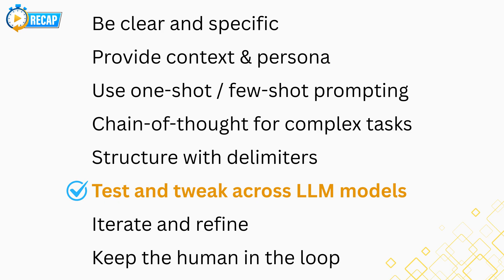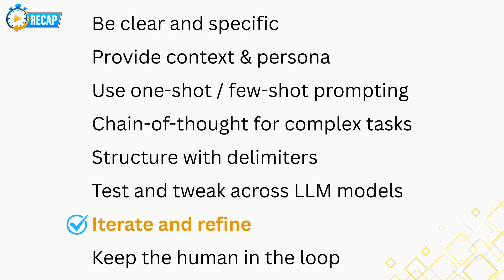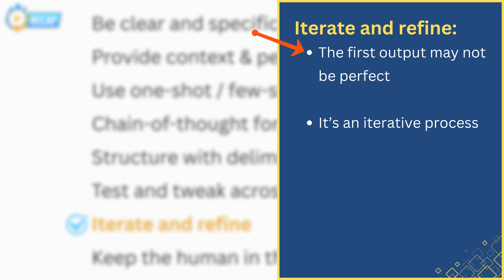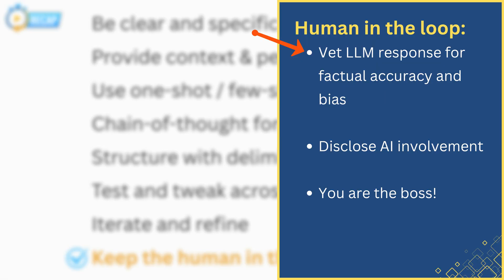Sixth, test and tweak across models — try your prompt on at least a couple of different AI models, such as ChatGPT versus Gemini, to see how they handle it. You might discover one model gives a superior result for your use case, and if one struggles, your prompt may need clarification. Seventh, iterate and refine — even with all of the above, the first output might not be perfect. Don't be afraid to refine and run again; prompt engineering is an iterative process. Finally, keep the human in the loop — when using advanced prompts, you can generate very convincing outputs, so always apply your human expertise to vet the AI's output, especially for factual accuracy and bias, and disclose AI involvement appropriately. AI is a powerful assistant, but you're still the boss.